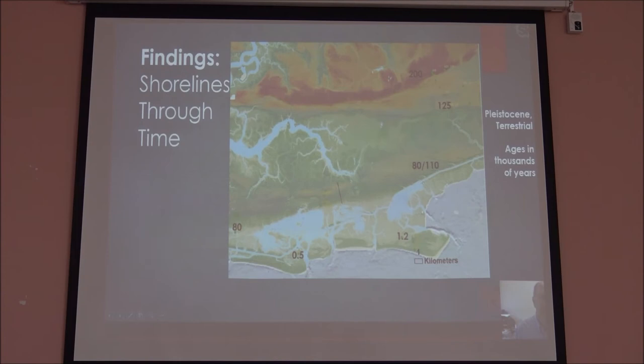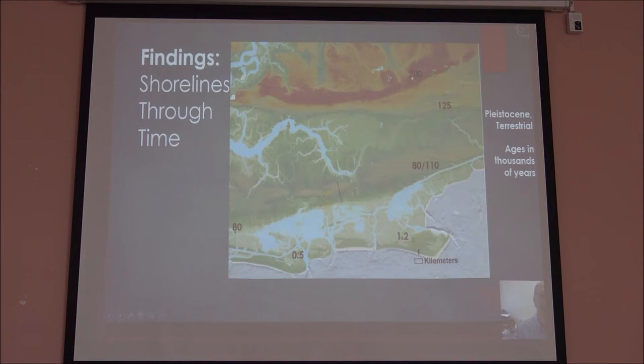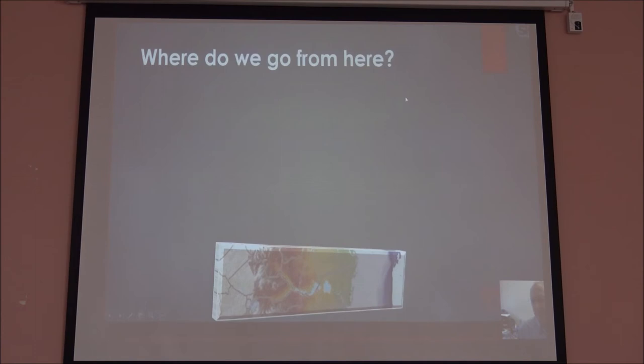Understanding how these areas get reworked and change becomes very problematic because you can see all of the cuts and fills. But here just north of the harbor — that's south of Charleston Harbor — we see all of these different ages again: 500 years, 1,200 years, 80,000, 125,000, 200,000 back on this ancient ridge.